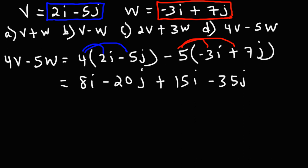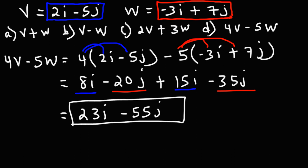Let's combine like terms. 8i plus 15i is 23i, and negative 20j minus 35j is negative 55j. So the final answer is 23i minus 55j.